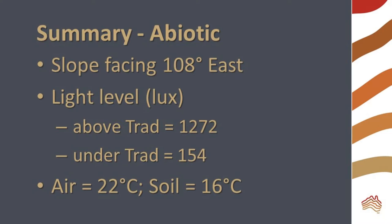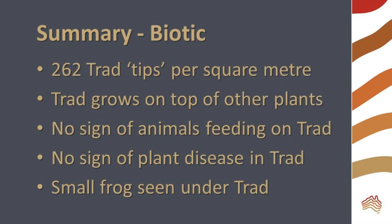Tradescantia shades the soil, which was much cooler than the air. For biotic factors, there were a staggering 262 growing tips per square meter in my weed patch. Trad grew over other plants, and there was no sign of disease or animals feeding on it. I did see a little frog under the mat of vegetation, so it can provide shelter for small animals.